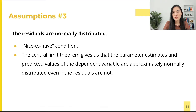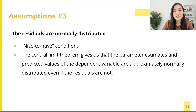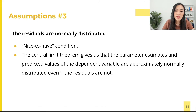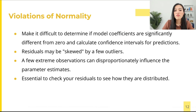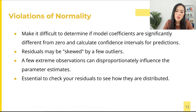Moving on to the third regression assumption: the residuals should follow a normal distribution. This is a nice-to-have condition, however it is not required. Here we benefit from the central limit theorem, which holds that if the sample size is large and the data do not have lots of outliers, then the parameter estimates and predicted values are approximately normally distributed even when the residuals are not.